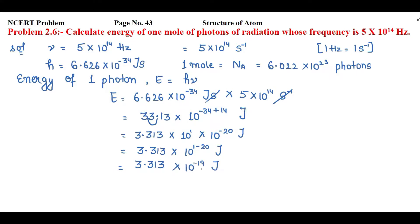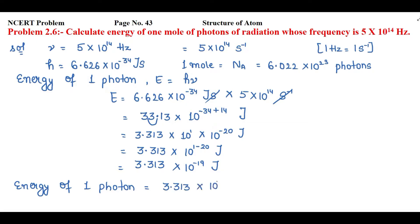So 3.313 × 10⁻¹⁹ joule is the energy of one photon. Now let's find the energy of one mole of photons. One mole of photons equals 6.022 × 10²³ photons. We'll apply the unitary method: the energy of 1 photon is equal to 3.313 × 10⁻¹⁹ joule.